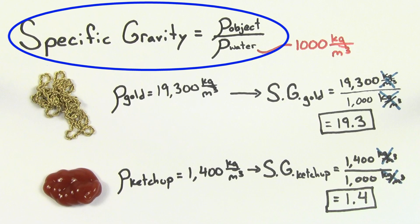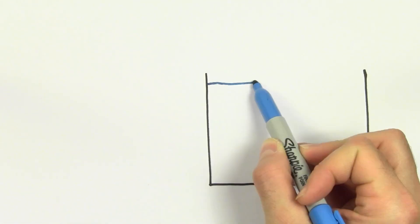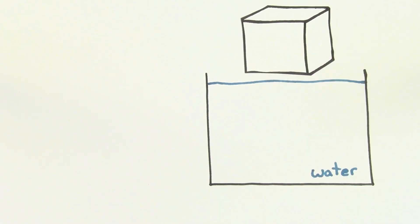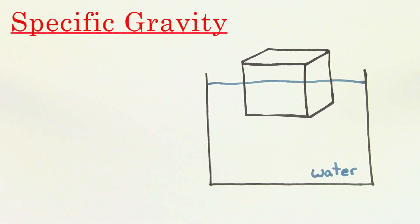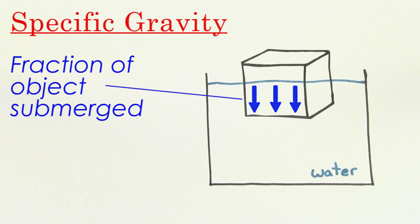Okay, so why even bother defining something called the specific gravity? Well, one really cool thing about specific gravity is that for something that floats, the specific gravity tells you the fraction of that object that will be below the water while it's floating.